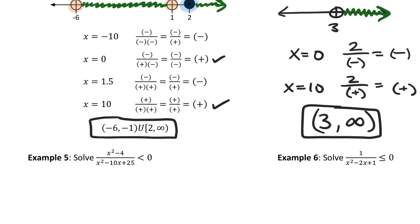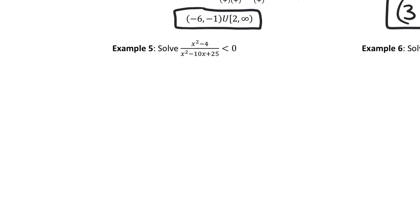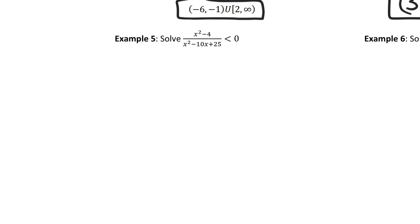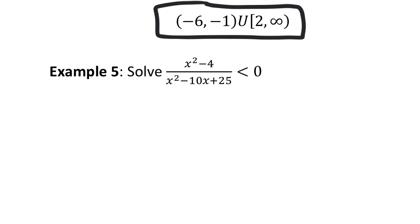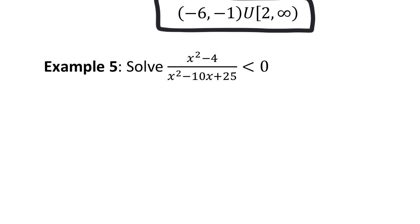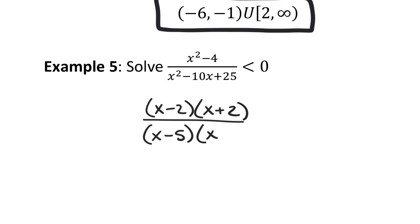Number five: we must factor first. The numerator x²-4 factors as (x-2)(x+2) — difference of two squares. The denominator x²-10x+25 factors as (x-5)(x-5) — a perfect square trinomial. Nothing cancels.